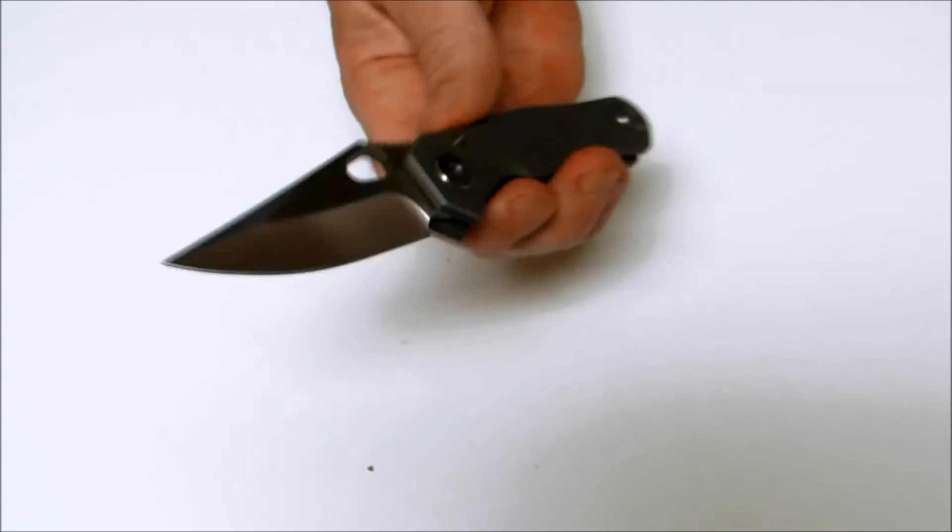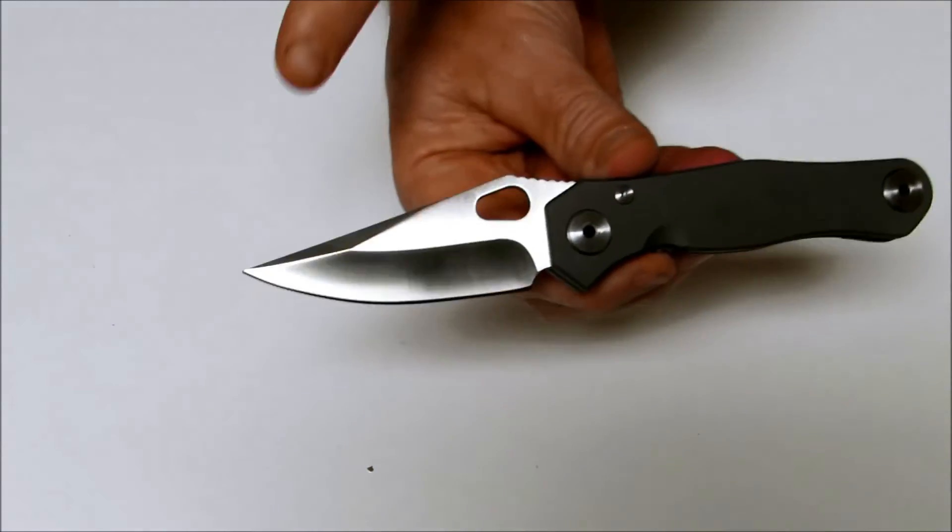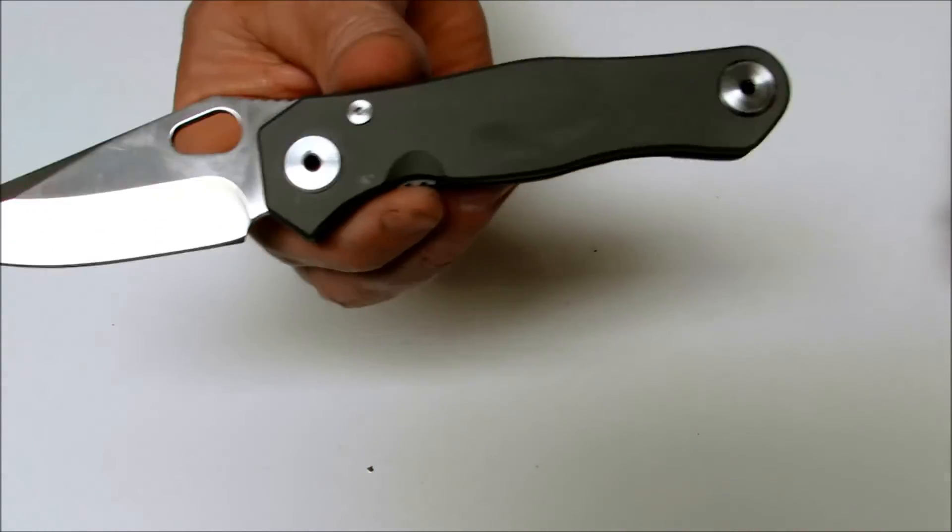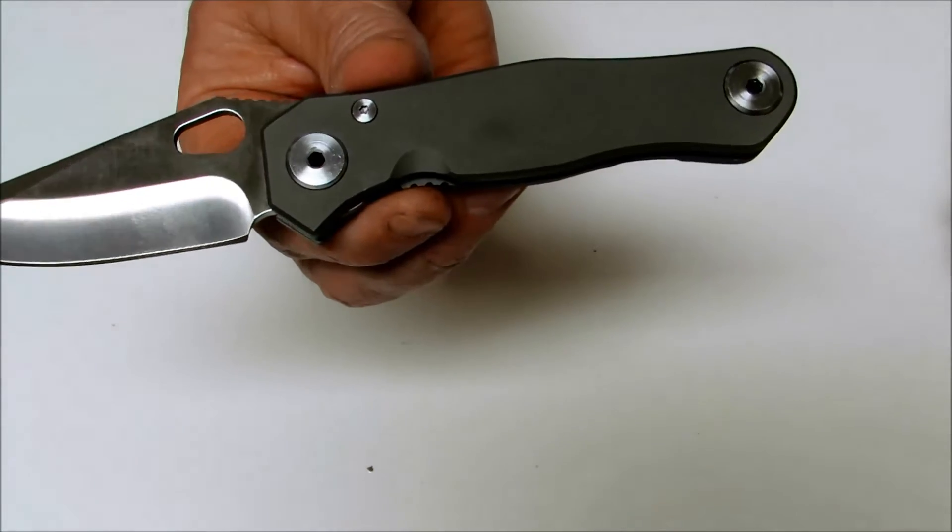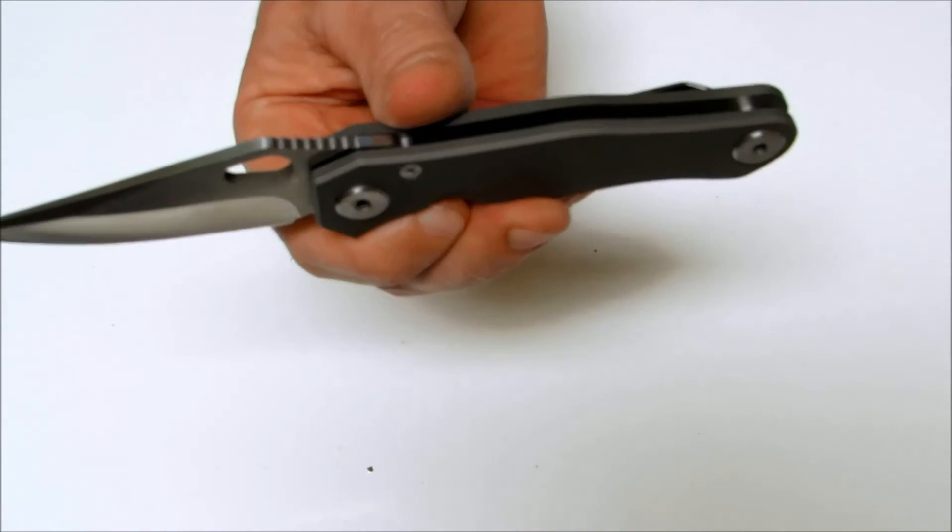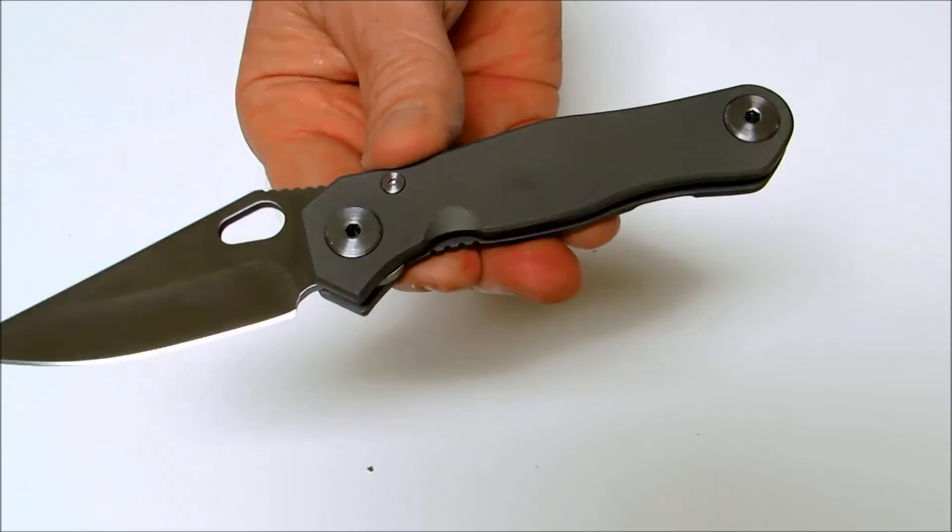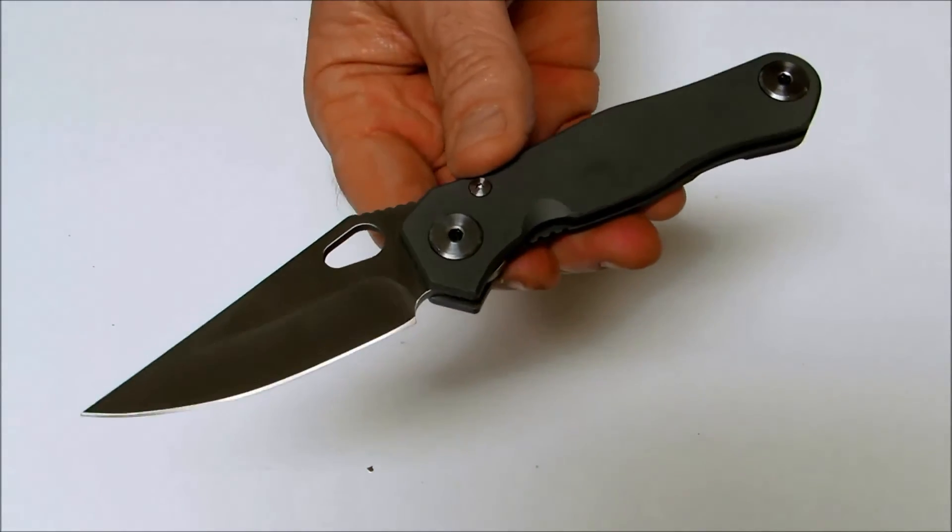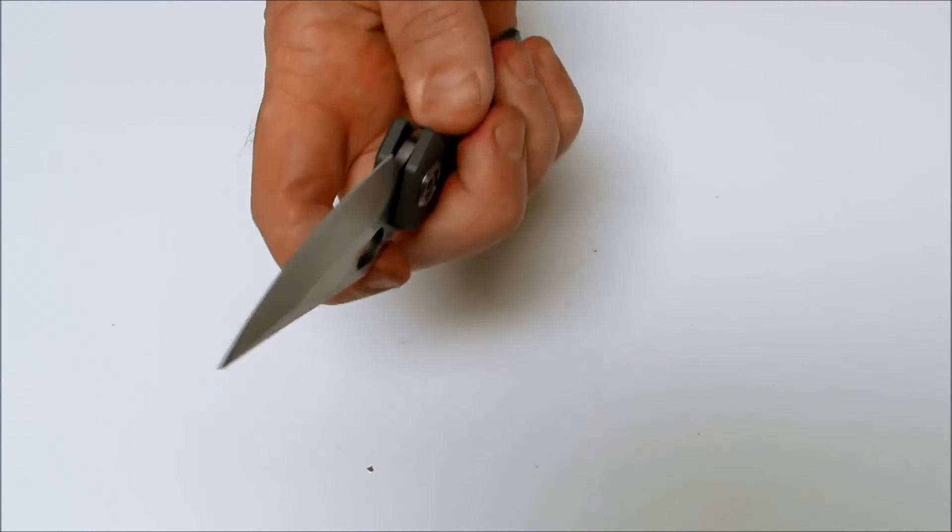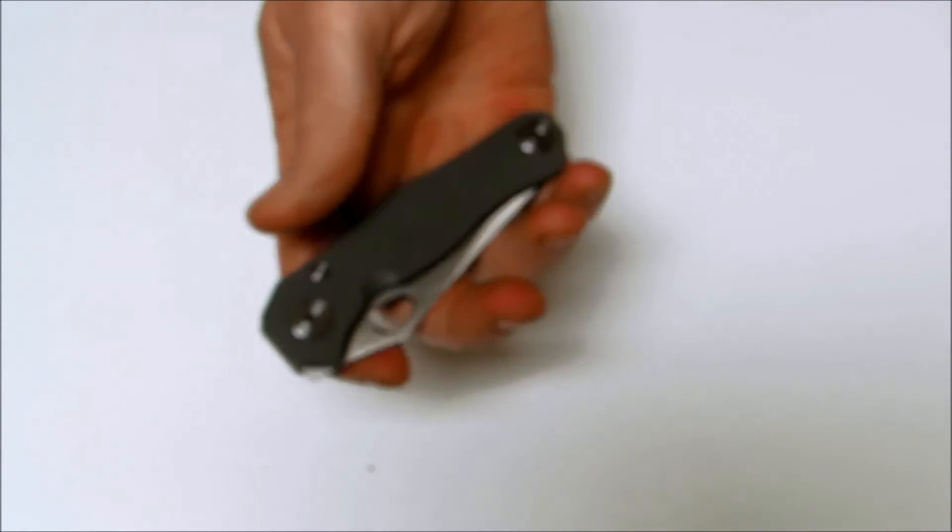It's got a three inch long blade. The overall length measures in at 7.375 inches and it's 0.12 of an inch thick. The steel is CPM 154, hardened to 58 to 60 HRC. It's a clip point style blade with a hollow grind.